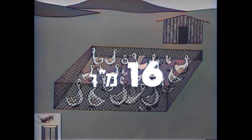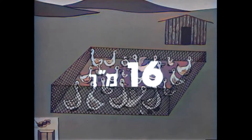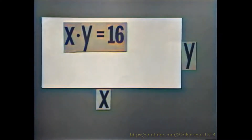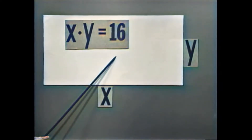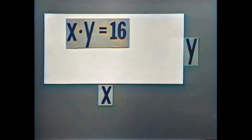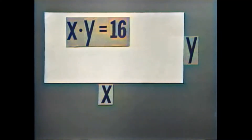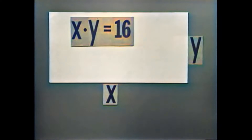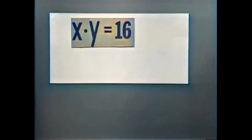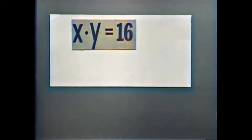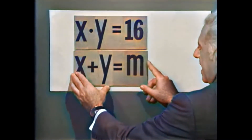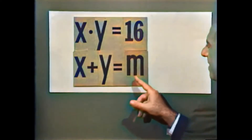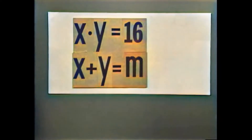אנחנו שואלים: מהו אורך הגדר הדרוש להקיף את החלקה? ראינו ש-X כפול Y שווה 16. הפעם המשוואה השנייה שואלת על ההיקף, ולכן היא מן הצורה X פלוס Y שווה M, כאשר M הוא מחצית ההיקף של החלקה.